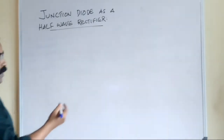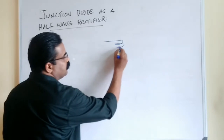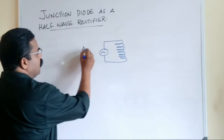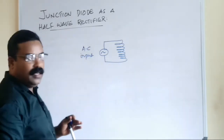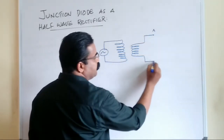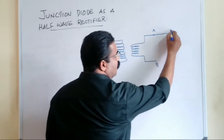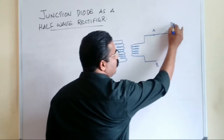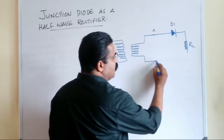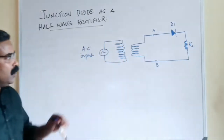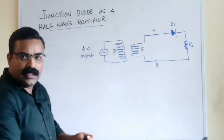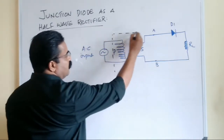Let us draw the diagram first. Initially we have a primary coil connected to an AC input. AC current is given to the primary coil and then correspondingly we have a secondary, with the two ends A and B. End A is connected to the P end of a diode — let us take this diode as D1 — and end B is connected to a load resistance RL. The primary coil and secondary coil together work as a transformer.